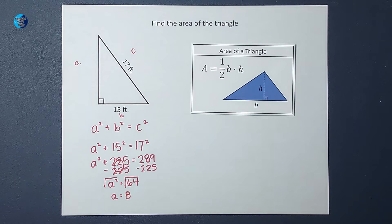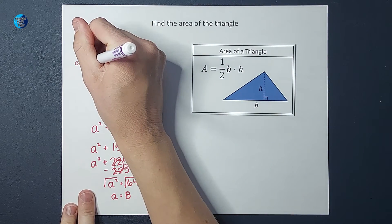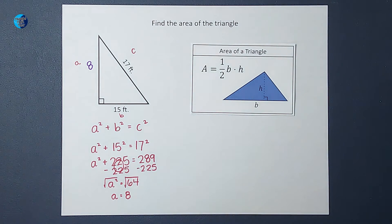Oh my gosh, I love it when they are not ugly decimals. Okay, so we figured out that a, or our height of our triangle over here, is 8. So now we have all the info we need to be able to figure out the area of this triangle.